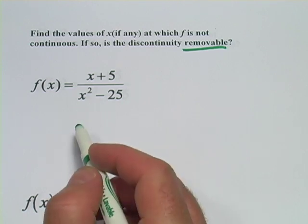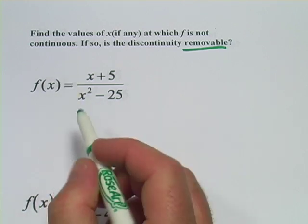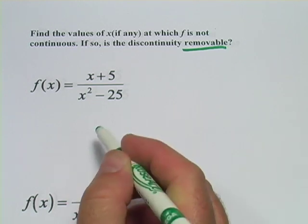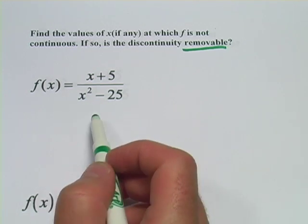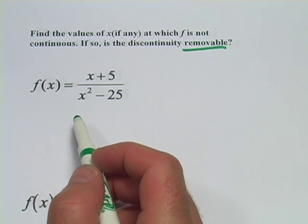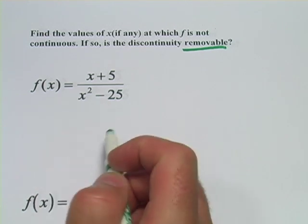On the graph of that, you'd see the function maybe shooting up to infinity on one side and down to negative infinity on the other side. There'd be an asymptote there. And that's a discontinuity in the graph. It doesn't smoothly flow from one point to the next at that point.